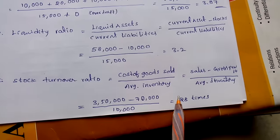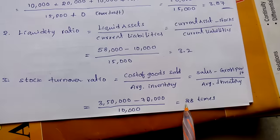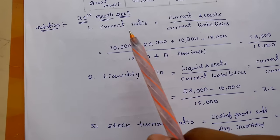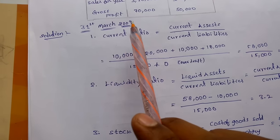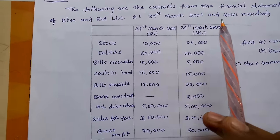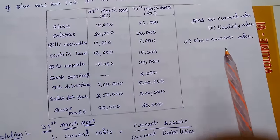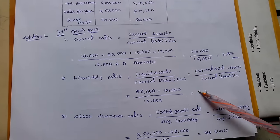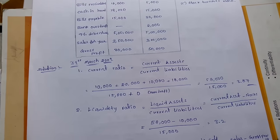The inventory turnover ratio equals 28 times for 31st March 2001. Now we need to calculate for 31st March 2002 — current ratio, liquidity ratio, and stock turnover ratio for 2002. The same procedure and formulas will be followed.